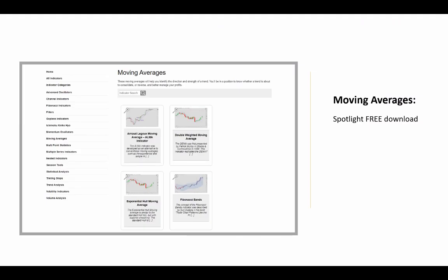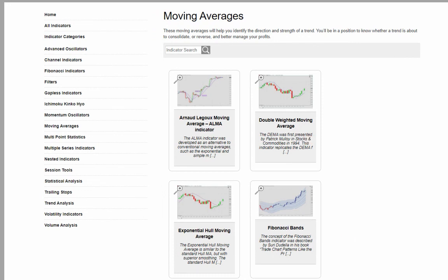So with that, we'll wrap up this indicator spotlight highlighting where to pick up your free download for the Arno Legault moving average. You'll find it in our moving average category, and members also have access to the other entries that you see here: double weighted moving average, exponential hull moving average, Fibonacci bands. We also have the HALT EMA, multi-rainbow, just to name a few.